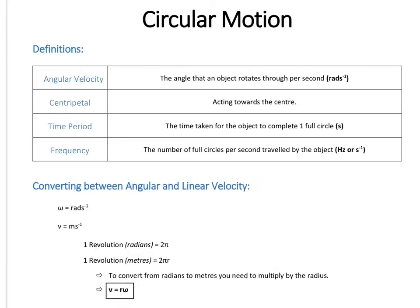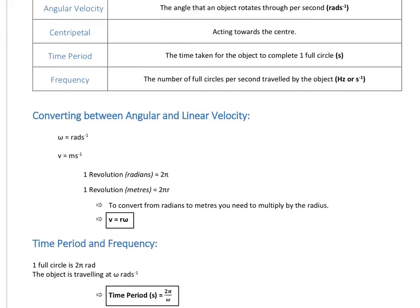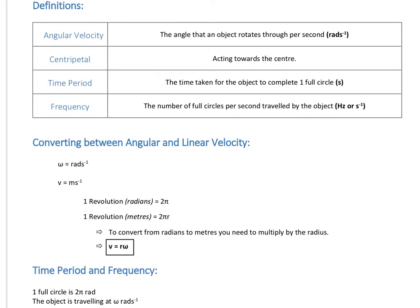You'll also need to know how to convert between angular and linear velocity — linear velocity is what you're familiar with from year 12, from things like projectile motion, which we usually give the symbol V. Angular speed is in radians per second, whereas linear velocity is in metres per second. So we need to work out how to convert between radians and metres, by thinking about a whole circle. One full revolution in radians is 2π radians, and in terms of distance one full revolution is 2πr.